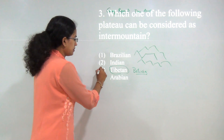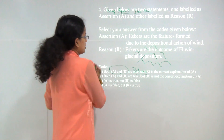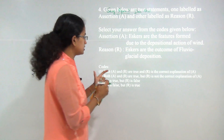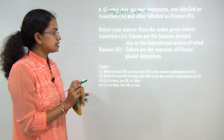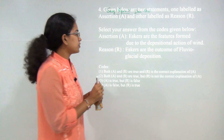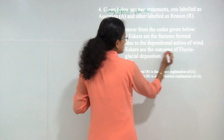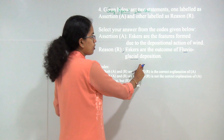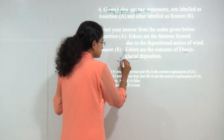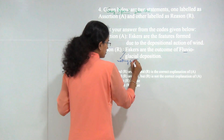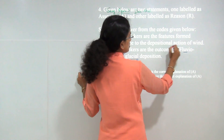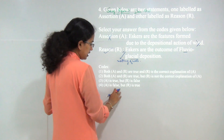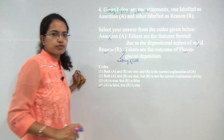Next question: you have assertion and reason. Under the reason, the statement is that eskers are an outcome of fluvio-glacial depositions — that is correct. It is an example of fluvio-glacial deposition, but it is formed due to melting water. The action of wind is incorrect, so the assertion is incorrect and the reason is correct. We say A is false and R is true, so 4 would be the correct option.